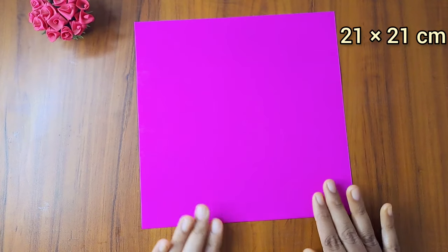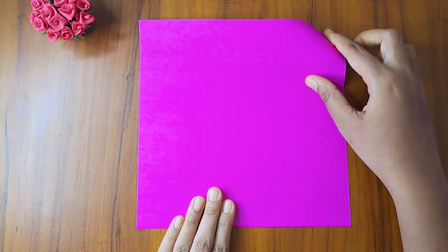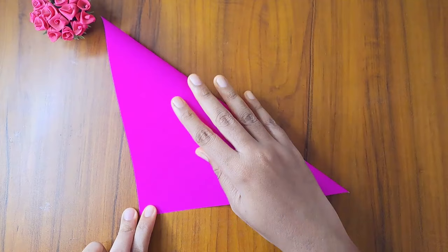Hi, welcome back to our channel. Today we are going to make a pencil case. This is a square size paper. This is a cross fold. When you fold it, you can crease it and open it.